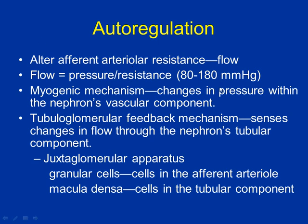You've seen this equation probably many times now. The kidney's autoregulation wants to keep blood flow low. If blood pressure gets between 80 and 180 mmHg, the kidney increases resistance by constricting the afferent arteriole, decreasing flow to protect itself.